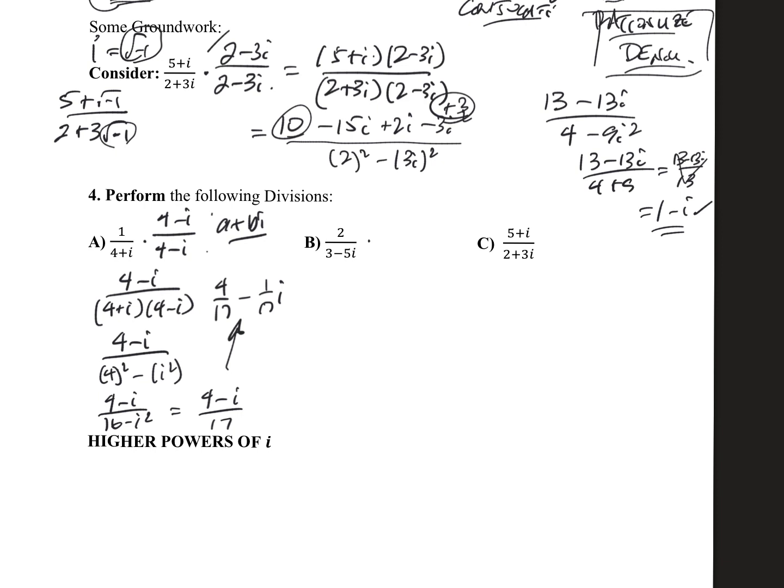So in the next one, we're dividing by 3 minus 5i. So to do the division, we actually multiply top and bottom by the conjugate to rationalize the denominator. So upstairs, we have 2 plus 5i. Downstairs, I have the difference of square. So let me go ahead and just cut to that chase.